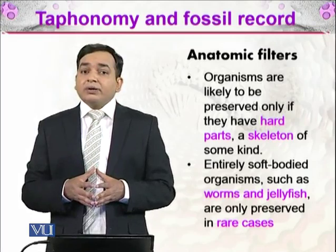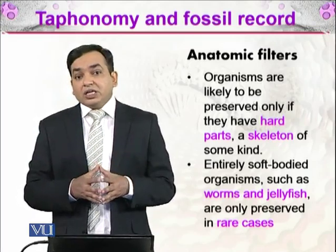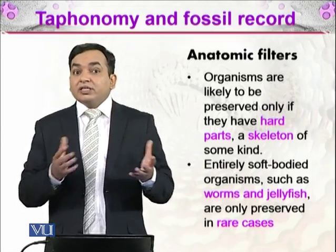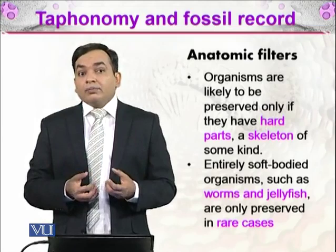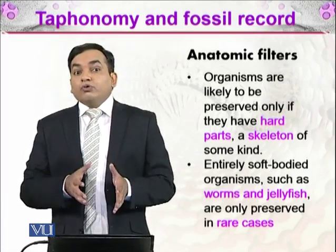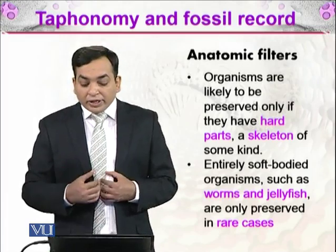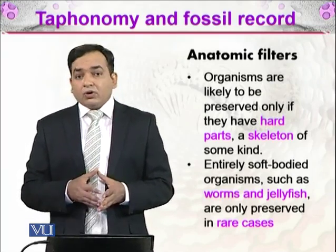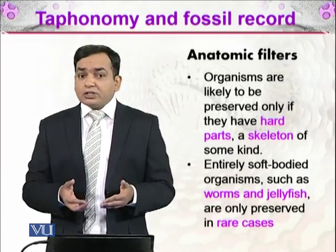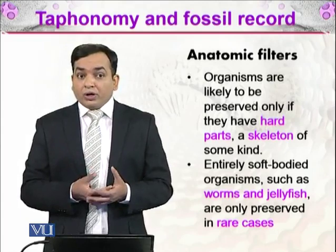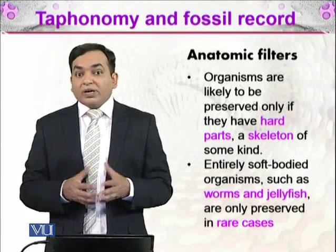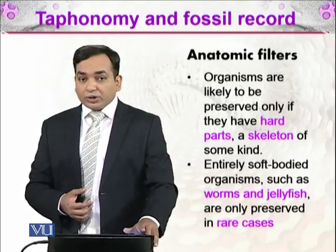We have excellently preserved fossils of dinosaurs, but have you ever seen a fossil of a dinosaur with its flesh, meat, skin? Of course not. We have plenty of fossils in the form of bones. Organisms are likely to be preserved only if they have hard parts or a skeleton of some kind. Entirely soft-bodied organisms such as worms and jellyfish are only preserved in rare cases, so we have a very different view of the ancient earth — we might think only hard-bodied organisms existed, but that is not the case.